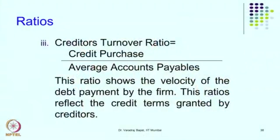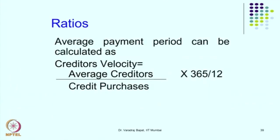These ratios are of more use for the management of the company. We also have the creditors turnover ratio — credit purchases upon average accounts payable — and we can calculate creditors velocity, that is how many days the company takes to make payment. This tells us how many days of credit the company is receiving, which reflects the company's reputation in the market.